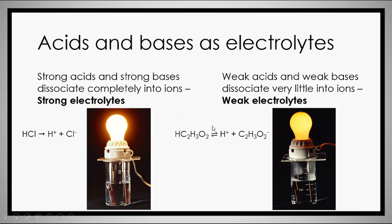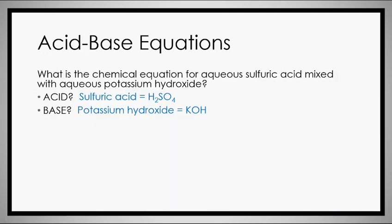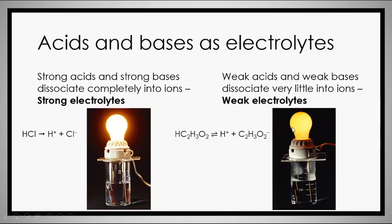On the other end, if you have weak acids or weak bases, they do not behave the same way. Looking at acetic acid — a weak acid — you do form some H+ and some C2H3O2-, but you form such a small, insignificant amount that most of it still stays as HC2H3O2.